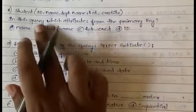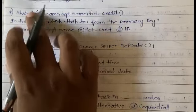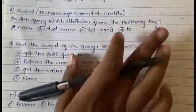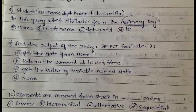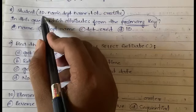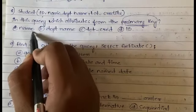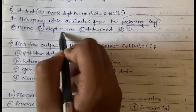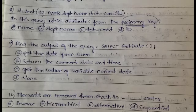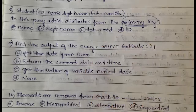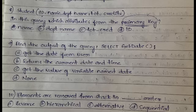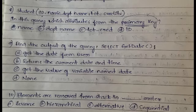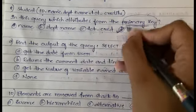This is a question related to databases. A student table has ID, name, department name, and total credit. In this query, which attributes form the primary key? A primary key is something with which we uniquely identify records in a table. Name can be repeated, department can have 500 to 600 students, and total credits can be the same for many students.